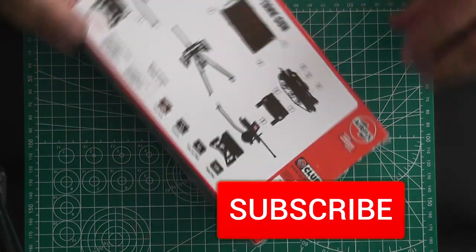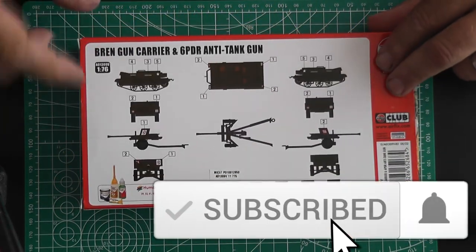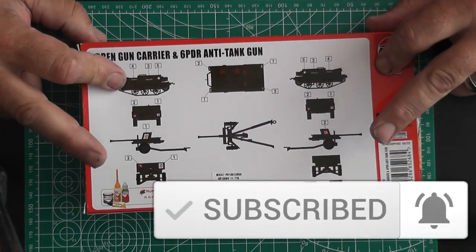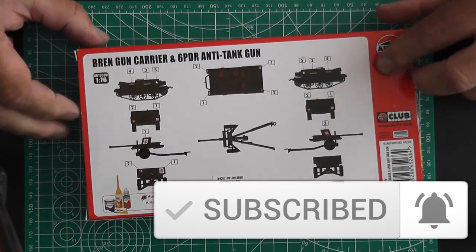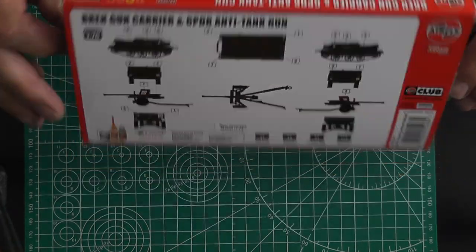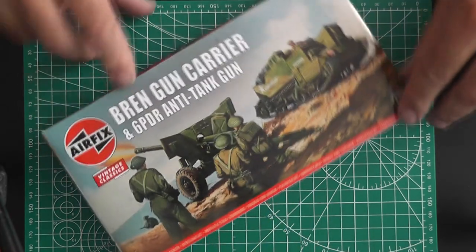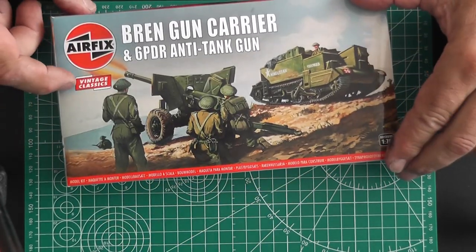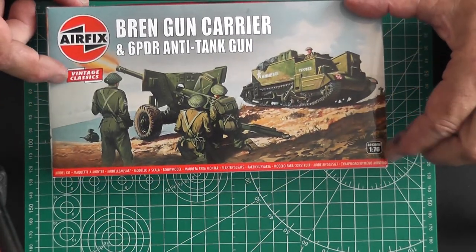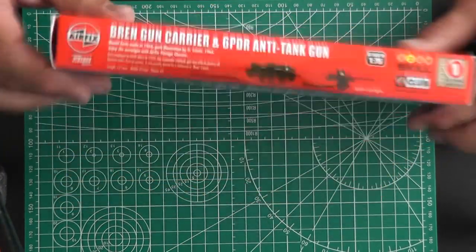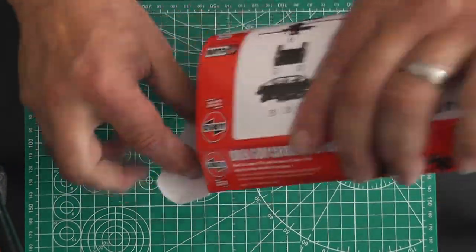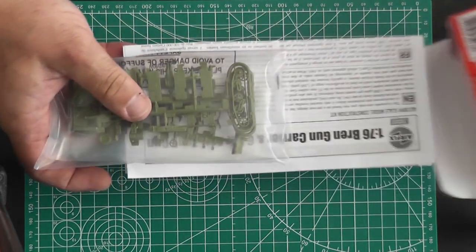Hello, welcome back to the Scow and Model Club. It's been a while and I'm back. I chose the smallest model we can find. It's the Bren gun carrier from Airfix and a six pounder gun and gun crew. It's one of the vintage classics, so it's a very old kit, 1/76th scale. Let's have a look what we get.